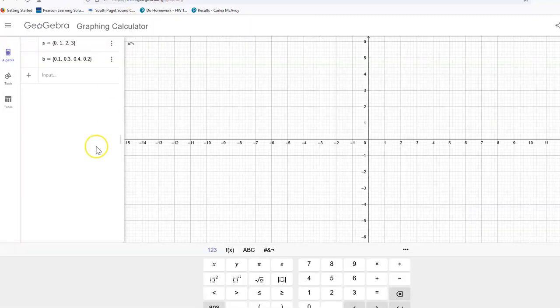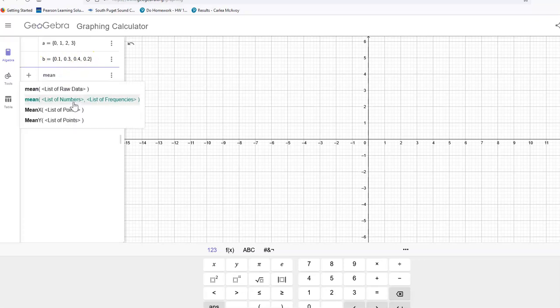graphing calculator, and then you come in here and you enter your data. So for the first row, we had the number of calls that they got per hour: zero, one, two, and three, and notice that I named that A. And then for the second row, we had the probability of getting those calls, which I called B. And now if I want to find the expected value or the mean, I just type in mean, and I have numbers and frequencies, so I want this. And you notice it says list of numbers, comma list of frequencies, so I'm going to do parentheses A comma B to get that mean of 1.7.